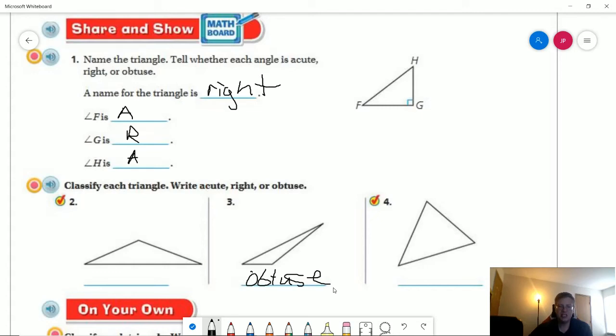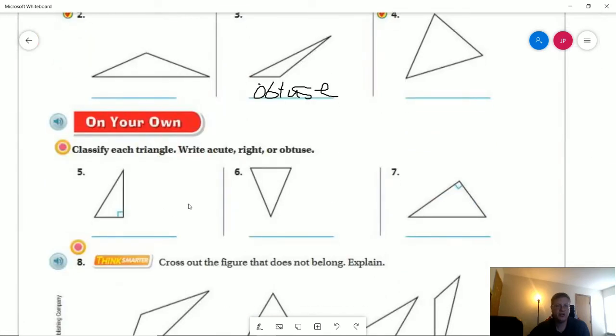So again, I have an angle here that is larger than 90 degrees. So that would be an obtuse triangle. Number four would be an acute triangle because all three are looking like that they are smaller than 90 degrees. Number five, again, we're classifying, we have this marking that shows that it is a right triangle.